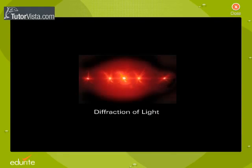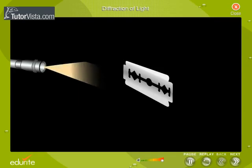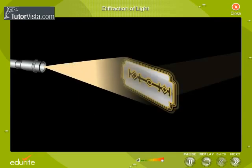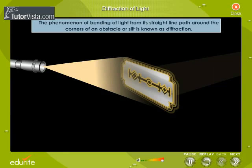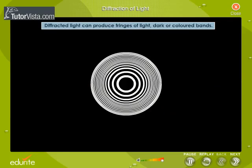Diffraction of light: A ray of light bends slightly as it passes around the edge of an object. The phenomenon of bending of light from its straight line path around the corners of an obstacle or slit is known as diffraction. Diffracted light can produce fringes of light, dark, or colored bands.